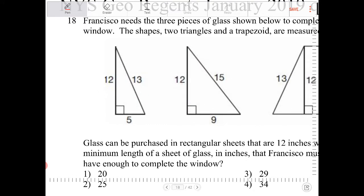So 5, 12, 13. Okay, so this guy right here has an area of 1/2, 5 times 12, right? Because it's base times height, divide by 2. So this guy will be 30.